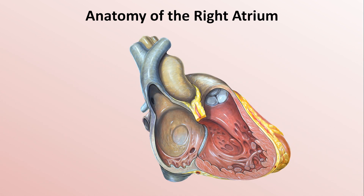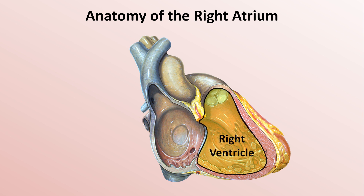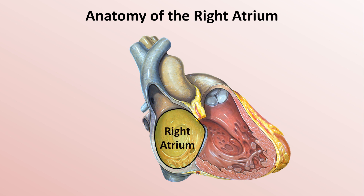Here's a cutaway view of the right side of the heart. To orient you, here's the right ventricle and the right atrium. The right atrium can be divided into two halves: the anterolateral trabeculated half is derived from the true embryonic right atrium, while the smooth-walled posteromedial half is derived from the sinus venosus.